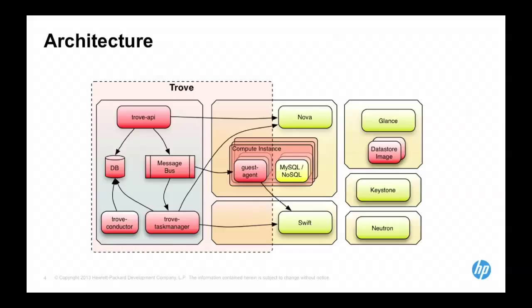The architecture at a very high level looks very much like most of the other OpenStack services. We've got RabbitMQ, a service database, and several control plane services. We've got the API server that handles all requests, a back-end conductor and a task manager. The interesting thing is we have a guest agent process that we run on every VM where the database lives. In Glance, we also have data store-specific images that we build using Disk Image Builder.